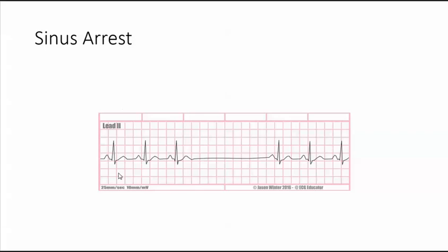Now if you'll notice, this is sinus because we have a normal P wave for every QRS. The PRI is normal, the QRS is normal. The rate without the pause or arrest is typically between 60 and 100 beats per minute. This is considered an irregular rhythm.